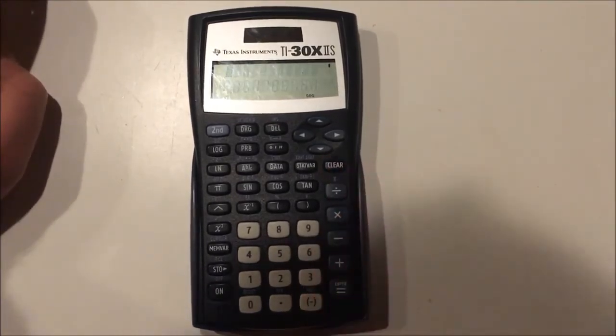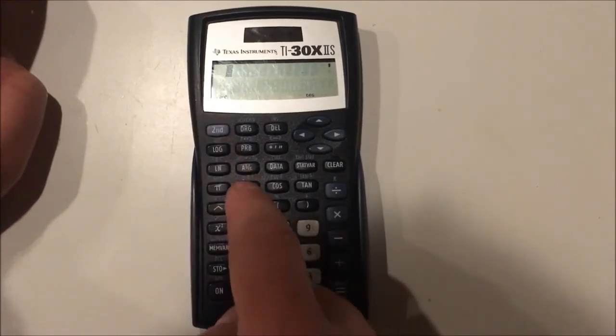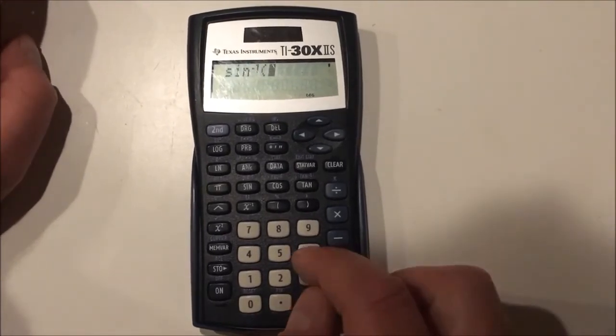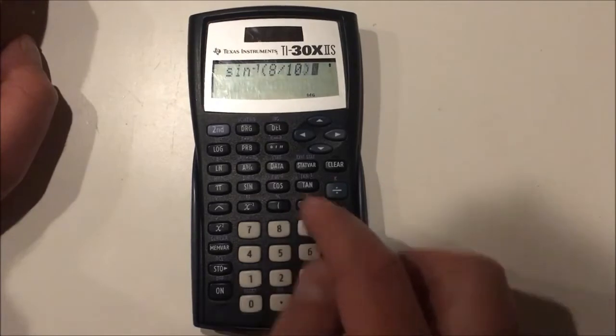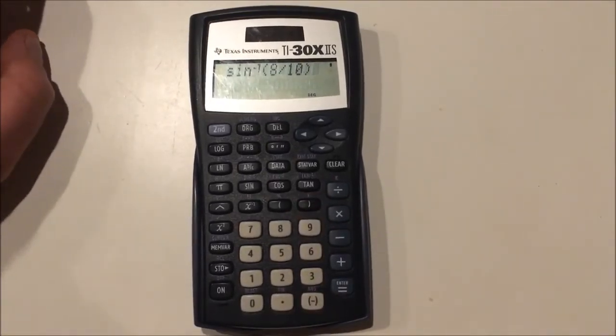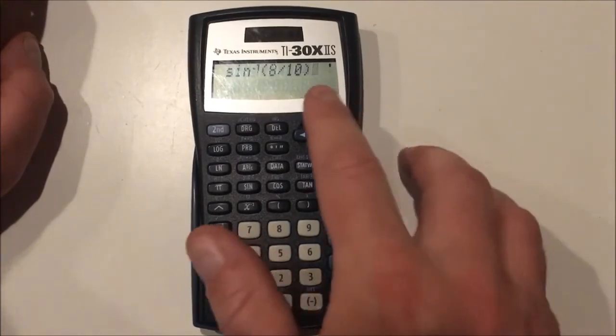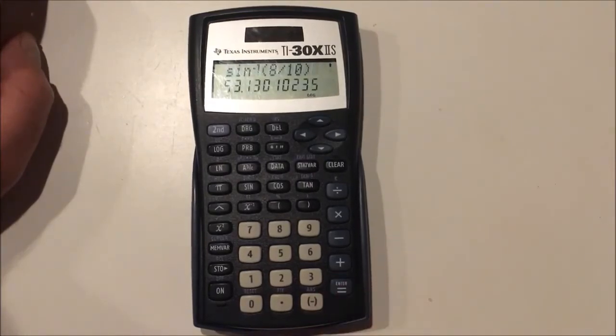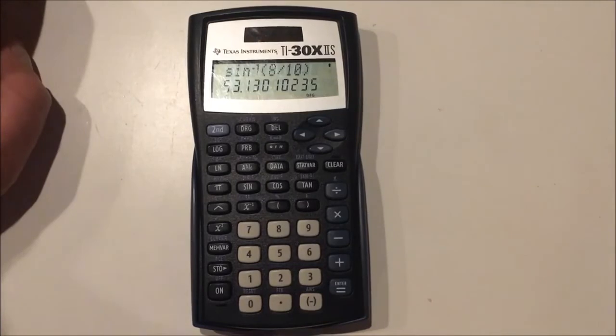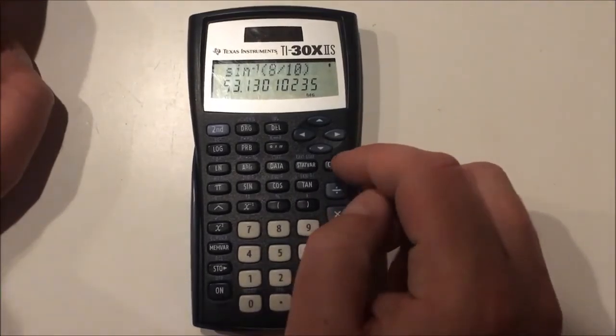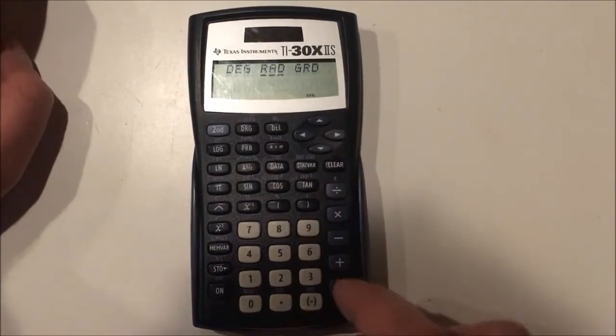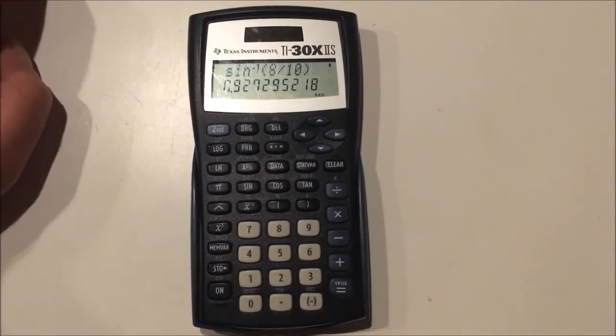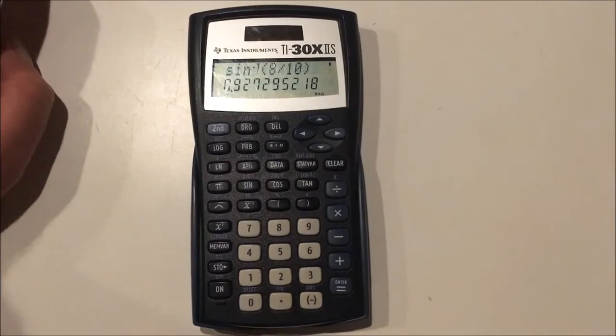Now I can do inverse trig functions by pressing second and then the trig button. So now I can calculate the inverse sine of something. How about 8 over 10. Remember for inverse trig functions we are plugging in ratios of sides and getting angles out. So in degree mode it will give me the angle that should be the inverse sine of this value in degrees, which is 53 degrees. Now if I switch to radian mode and I evaluate the same expression, I will get something completely different because now I'm getting the same angle in radians rather than degrees.